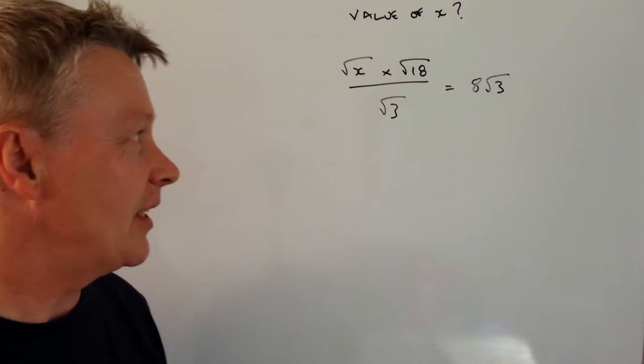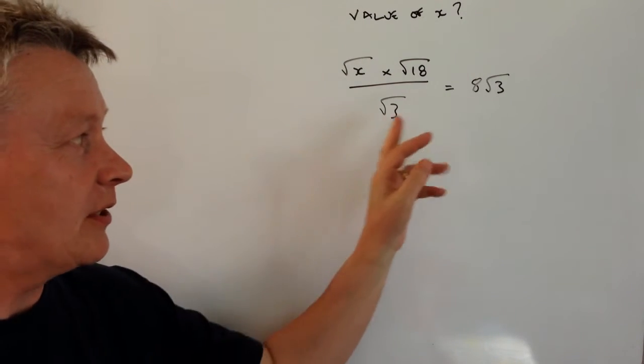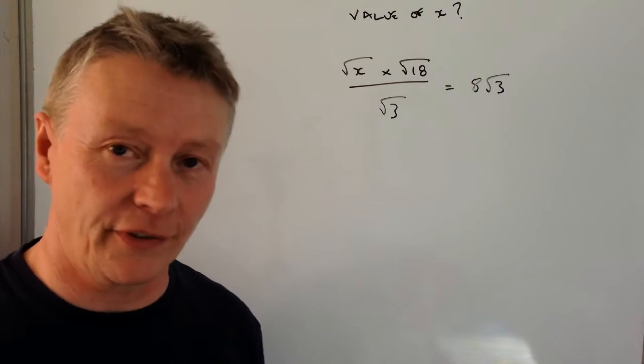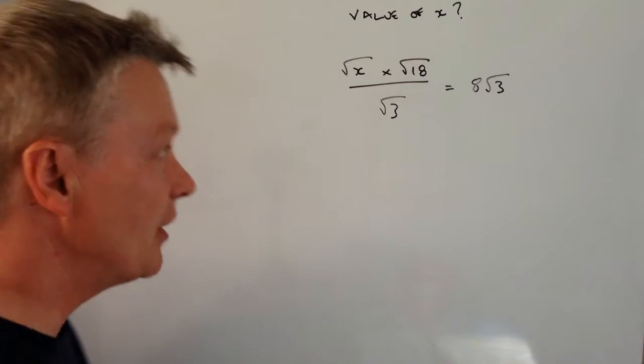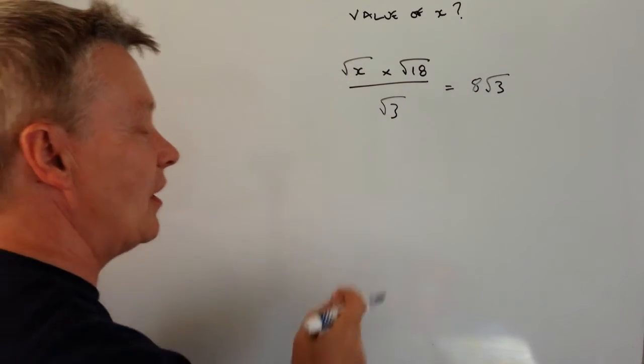Okay, well the easiest way of dealing with these is that when you see a denominator it's better to multiply through by that denominator and then I lose this side.